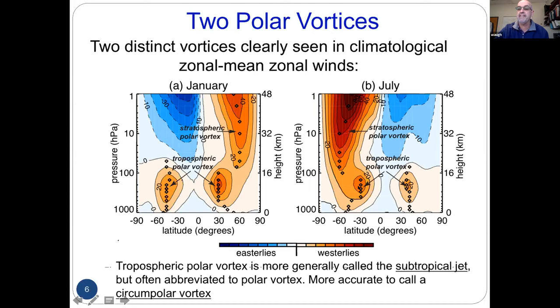Many people would say this is just the jet stream or the subtropical jet. And in effect, that's what the tropospheric polar vortex is — it's more just the jet stream, not specifically in the polar regions.